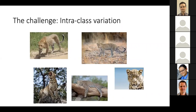So why do current recognition systems find this challenging? The challenge is that there's a huge amount of intra-class variation. Any class that recognition systems are asked to recognize usually has a lot of different modes of appearance. Any single example is not enough to capture this diversity — be it changes in background, changes in scale, changes in pose, and so on. If no single example suffices to capture all these modes of variation, how is it that we humans can do this?